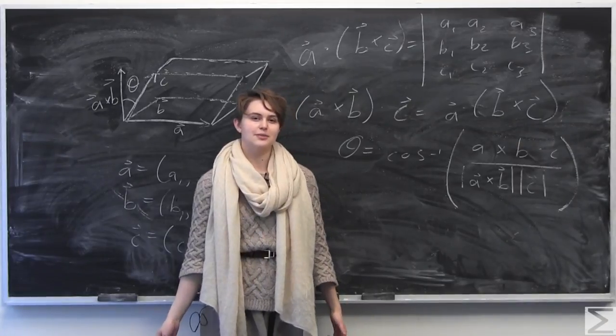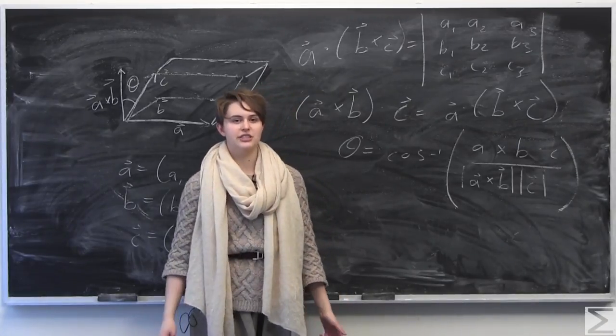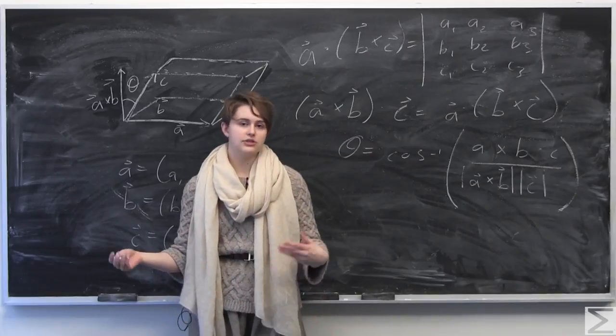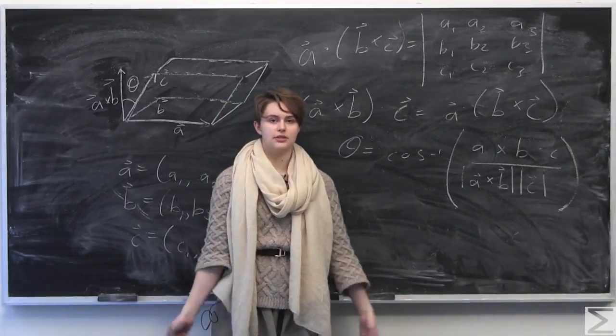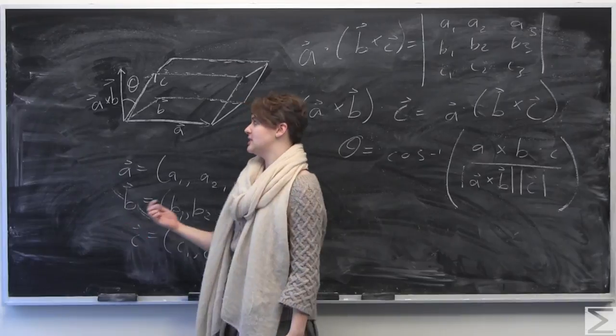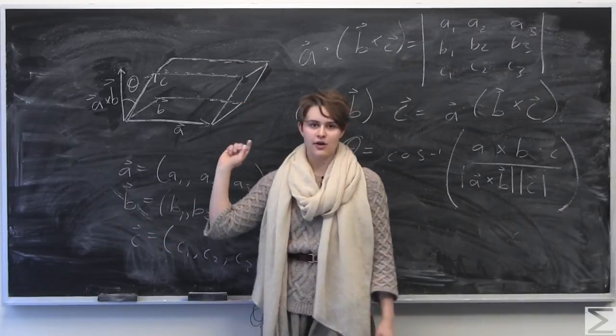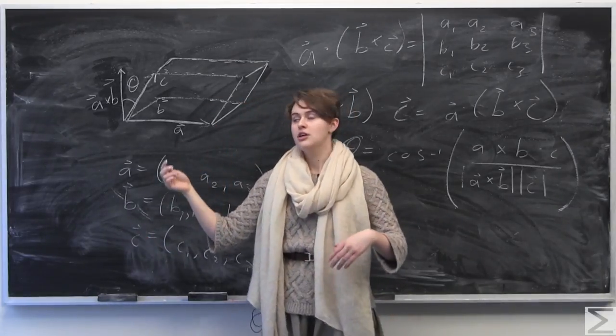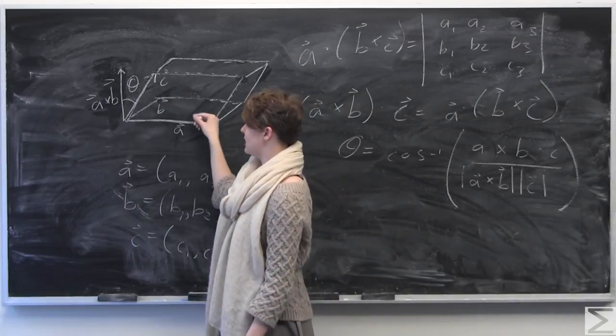So maybe wondering what the use of the triple product is, because it seems like kind of an arbitrary operation that we take on three vectors. We already know the dot product at this point, and we already know the cross product. So the triple product is pretty cool, because it's going to give us a signed volume of what's called a parallel piped spanned or defined by the given three vectors.